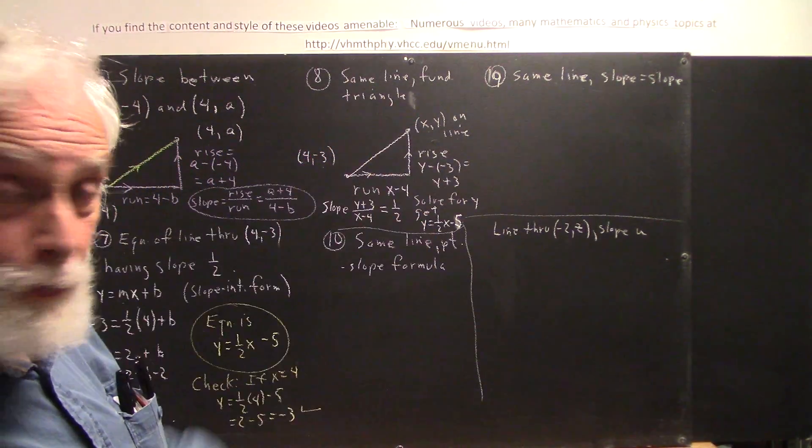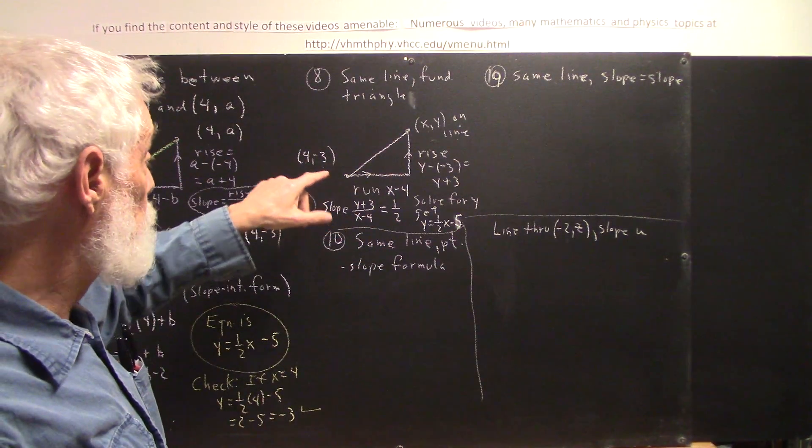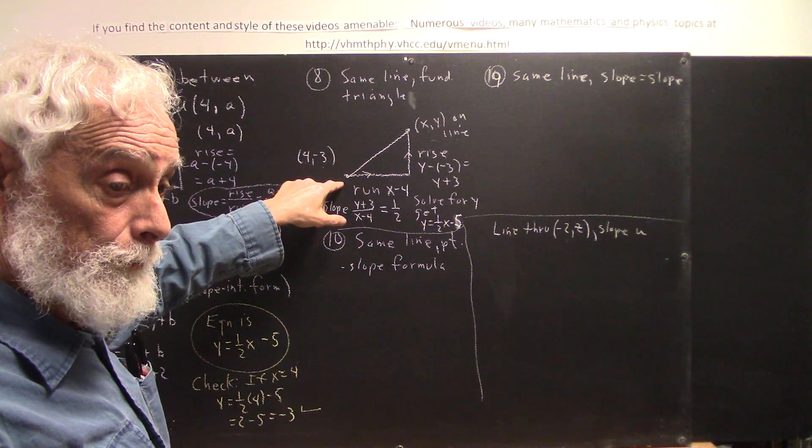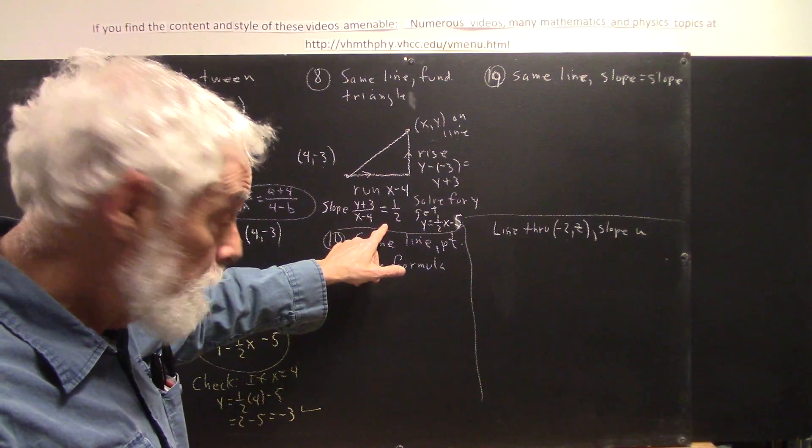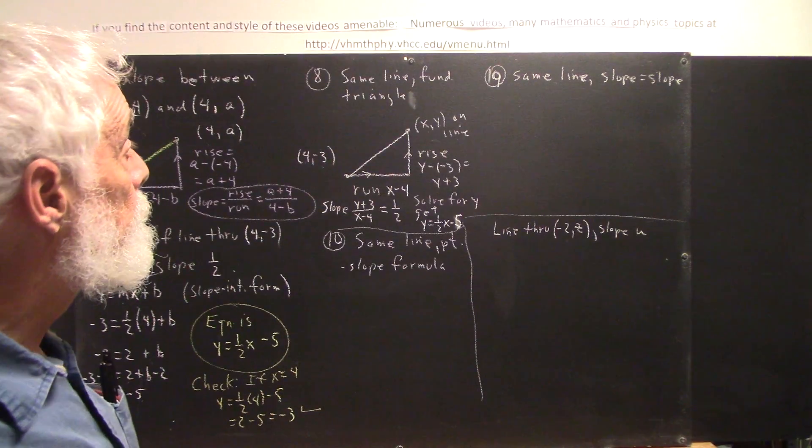And here's a picture that explains exactly what it means for the point x, y to be on the line through 4 negative 3. If the line has slope 1 half, then we get this.